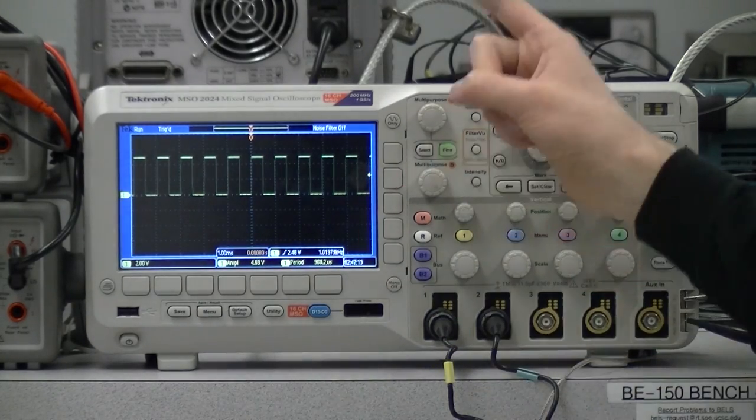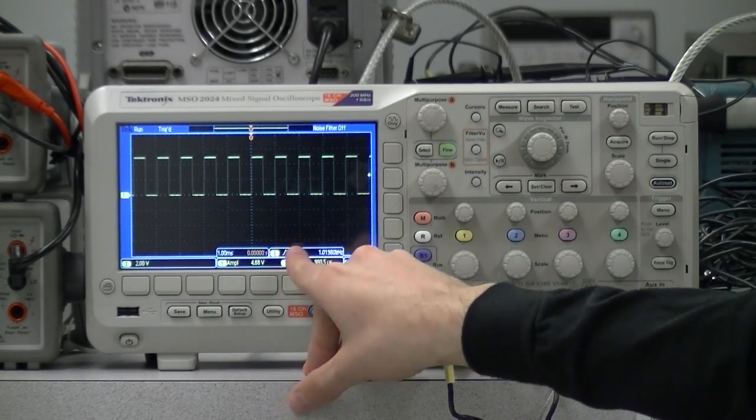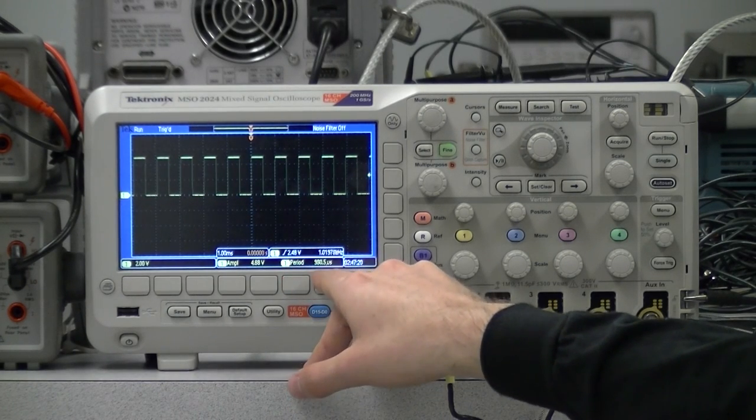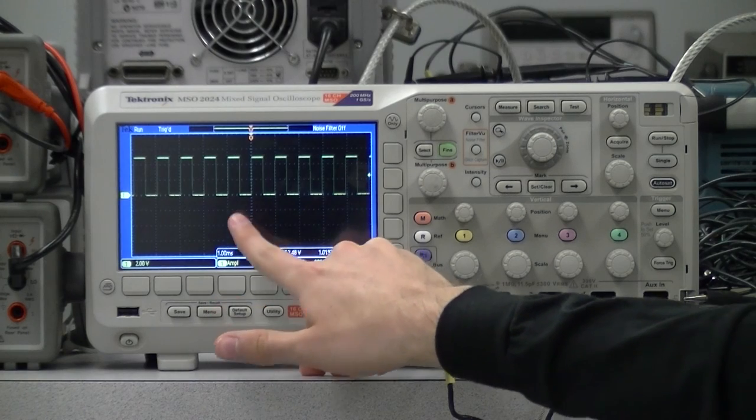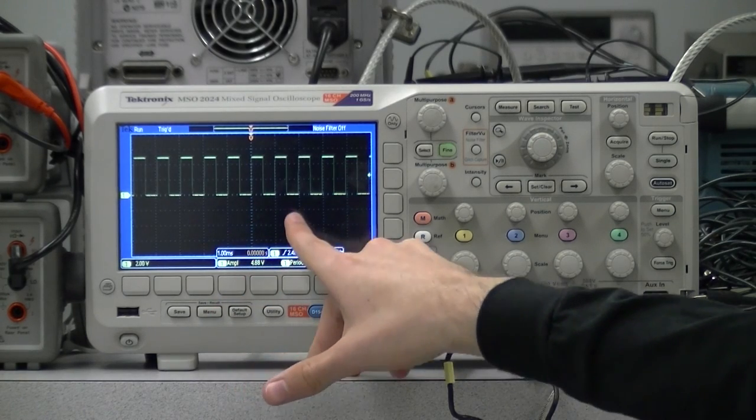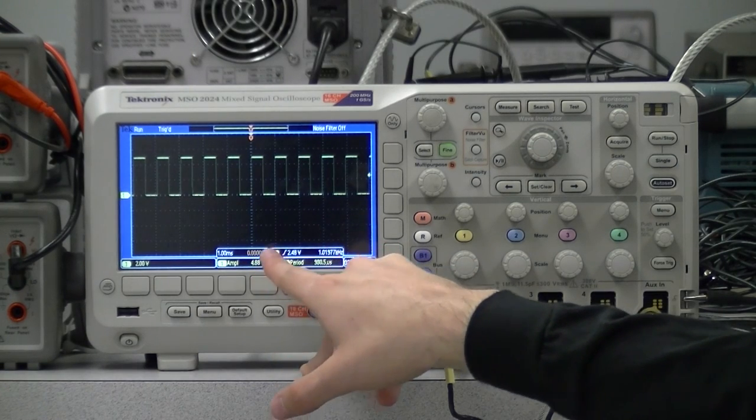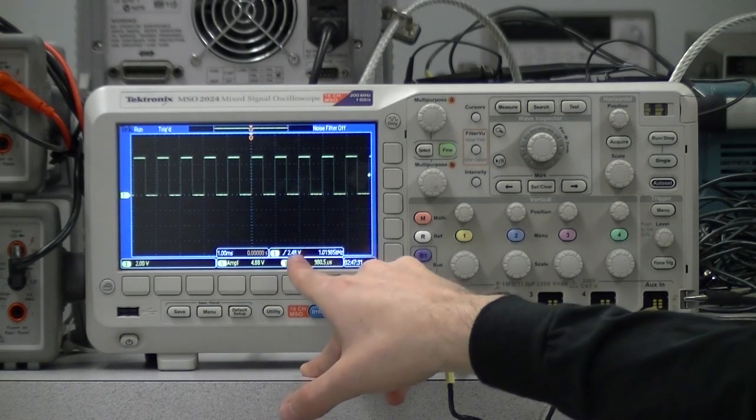We have to press it once for each menu we want to close. We can now see here that the period is reported as about 980 microseconds, and the amplitude as 4.88 volts. If the scope were perfectly calibrated, this would be 1 millisecond and 5 volts, but these have not been maintained in about 15 years.